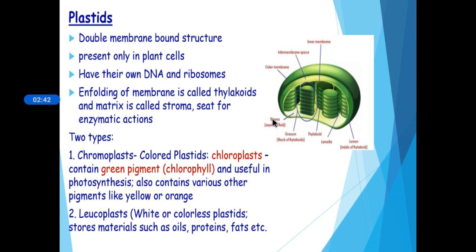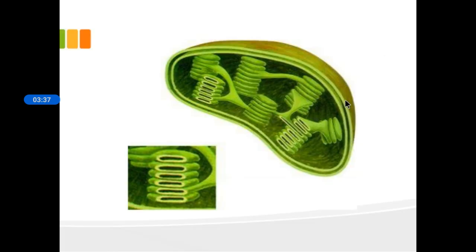There are two types of plastids: chromoplast and leukoplast. Chromoplast means colored plastid — if it contains green pigment, that is chlorophyll, which is useful in photosynthesis, the plastid is called chloroplast. Chromoplasts can also contain other pigments like yellow and orange. Leukoplasts are white or colorless plastids; they store materials such as oils, proteins, fats, and starch.